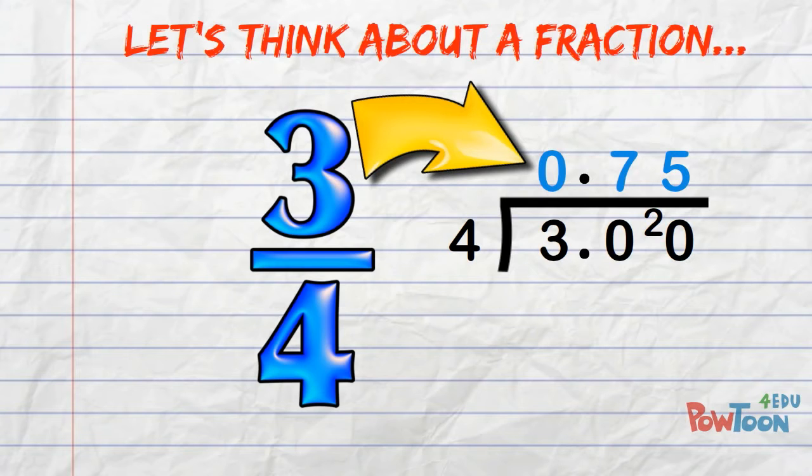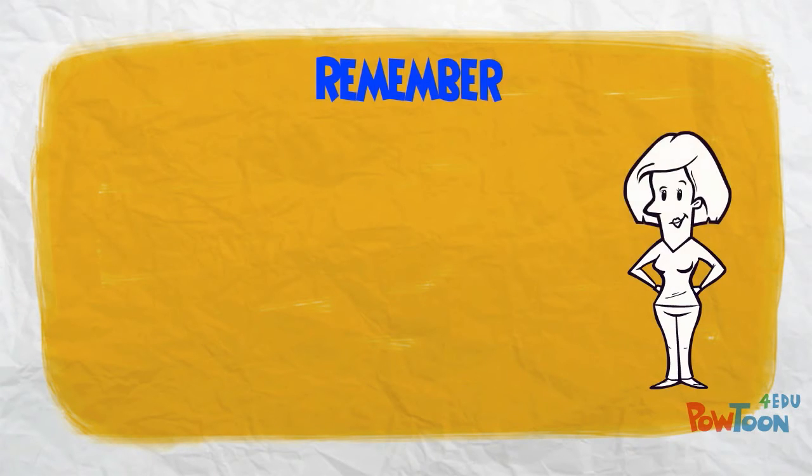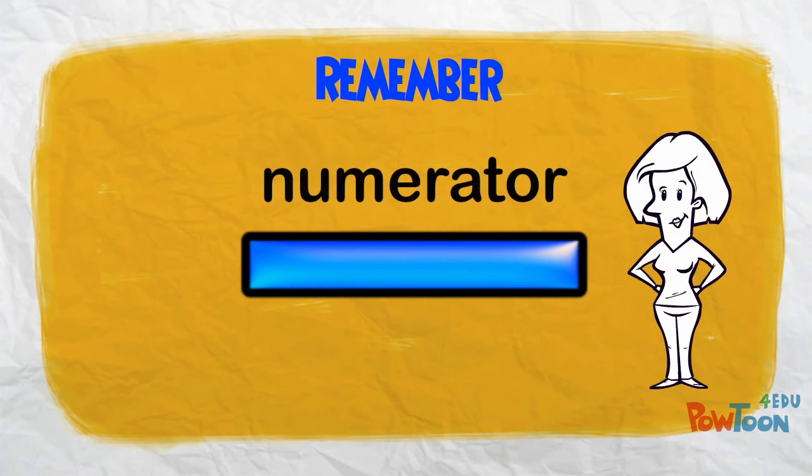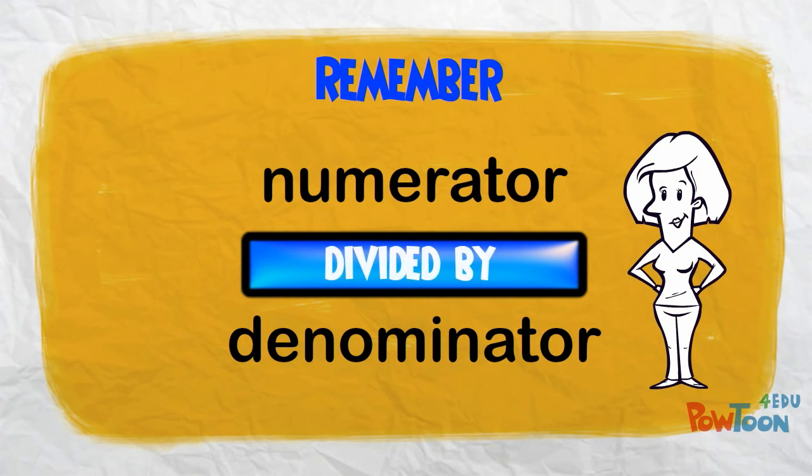Remember, the line between numerator and denominator shows we are dividing. Now let's extend that understanding.